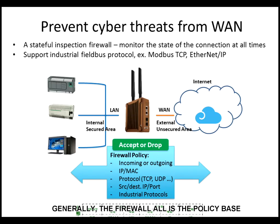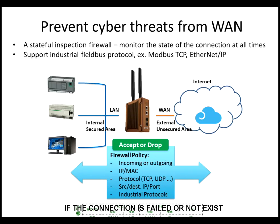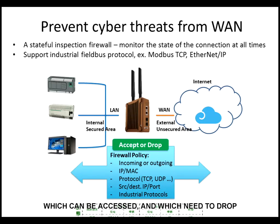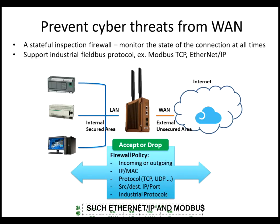Generally, firewalls are policy-based, but we support a stateful inspection firewall that can monitor the state of connections at all times. If a connection fails or does not exist, it will be dropped. In our firewall, you can set policies not only for incoming and outgoing packets — specifying which can be accessed and which should be dropped — but also filter by IP, MAC, TCP/UDP, or even industrial protocols such as EtherNet/IP and Modbus.